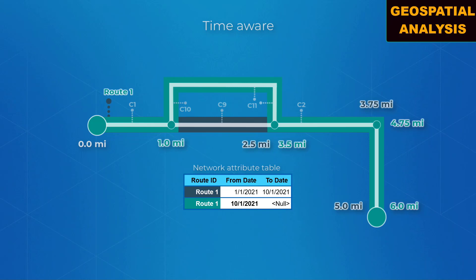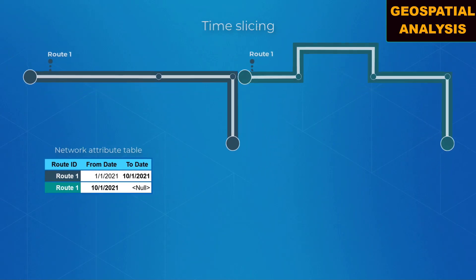The from date for the new feature and the to date for the original feature are both updated to October 1, 2021. This process is called time slicing.